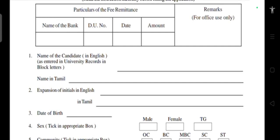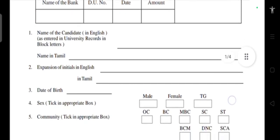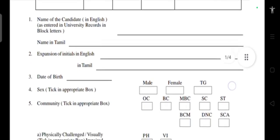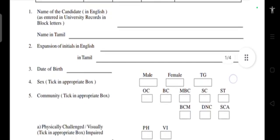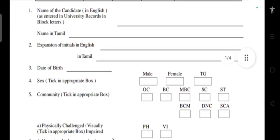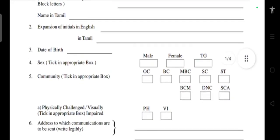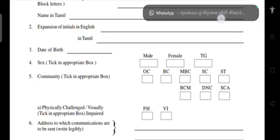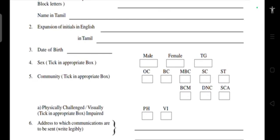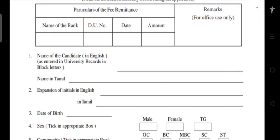The first thing is the name of the candidate in English as entered in university records, in block letters. Write your name as per your SSLC record in English. Then write your name in Tamil, and the expansion of initials in both English and Tamil.